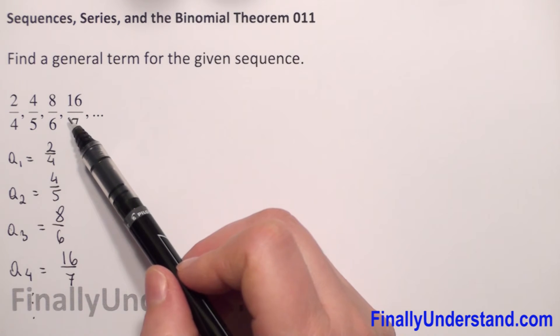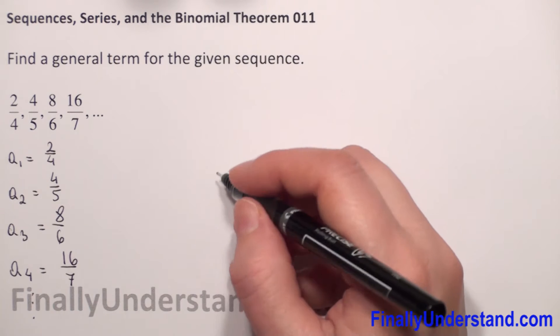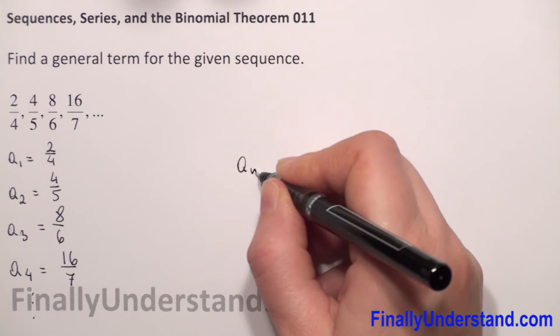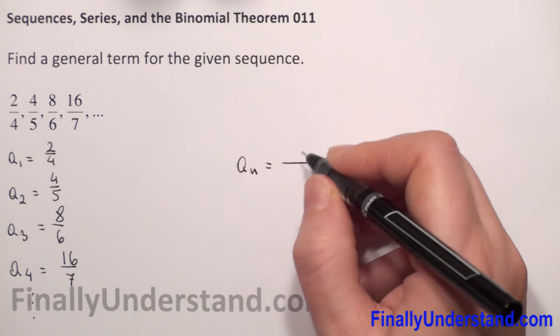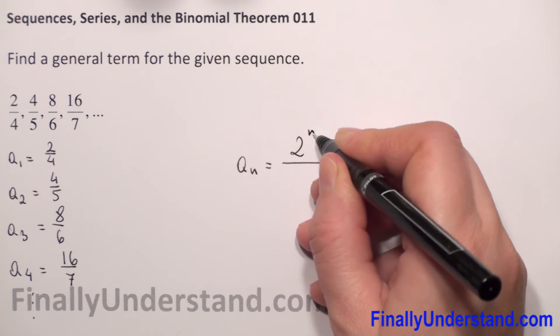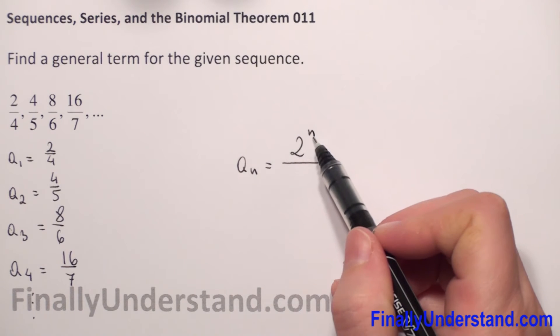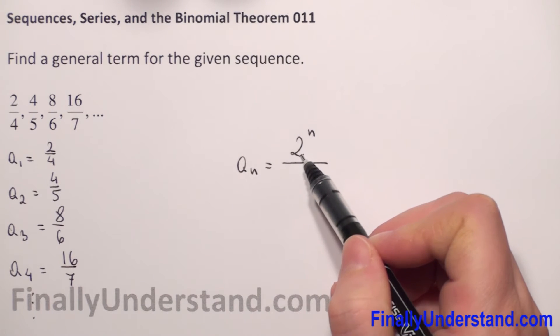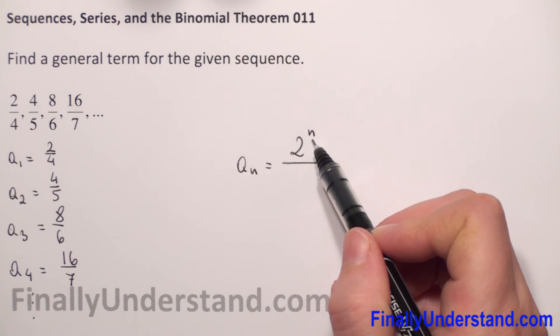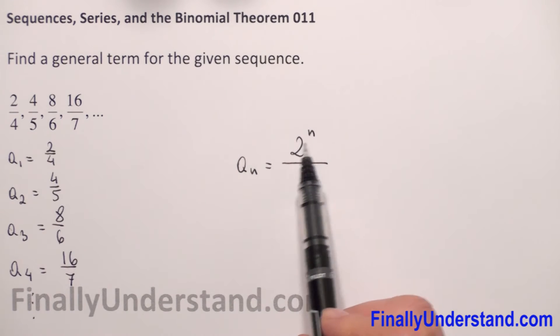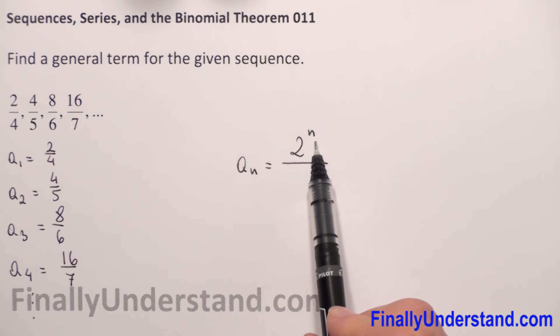So our general term we can rewrite: a_n is equal, in our numerator we have for sure 2 to the n power. When n equals 1 it will be 2, when n equals 2 it will be 4, for n equals 3 it will be 8, for n equals 4 it will be 16, and so on.